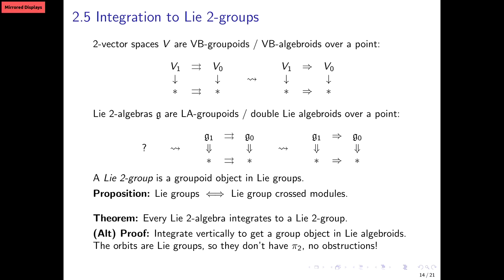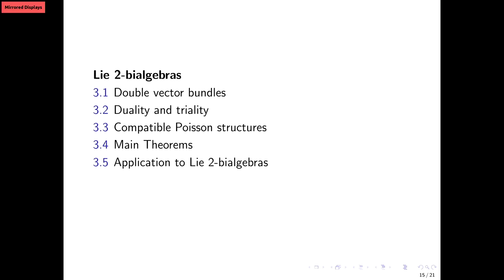Let me rush in the last minutes to tell you about the third level of complexity in our work. I talked about Lie Bi-algebras, Lie 2-algebras, and now I'm going to talk about Lie 2-Bi-algebras. To do this, I need to move to the geometric setting — I am kind of forced to do it. So differential geometry appears naturally, and I wonder how many of these things have a counterpart for an abstract field. I will talk a bit about double vector bundles, their duality and triality, compatible Poisson structures, and our main theorems.